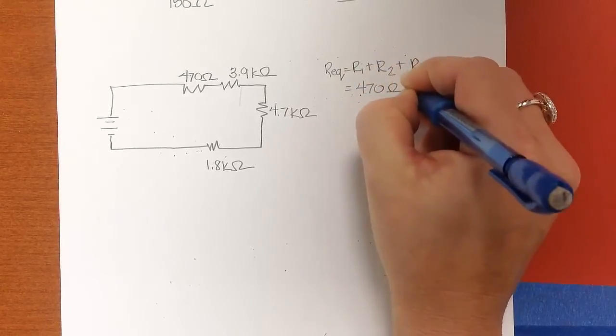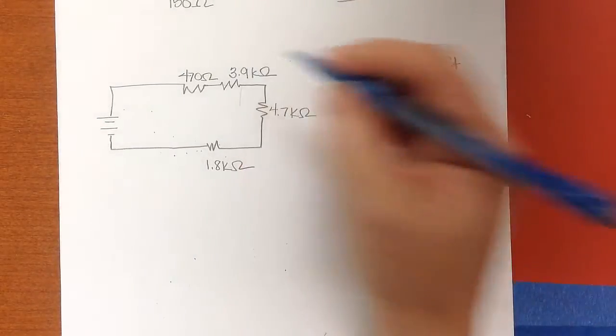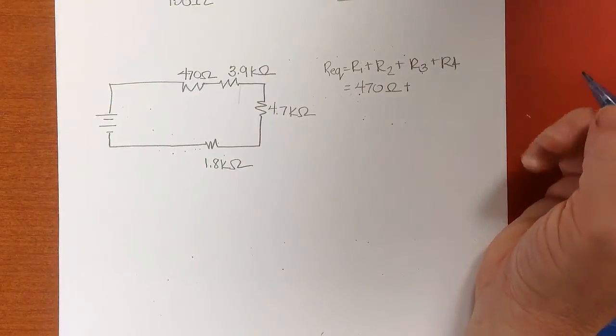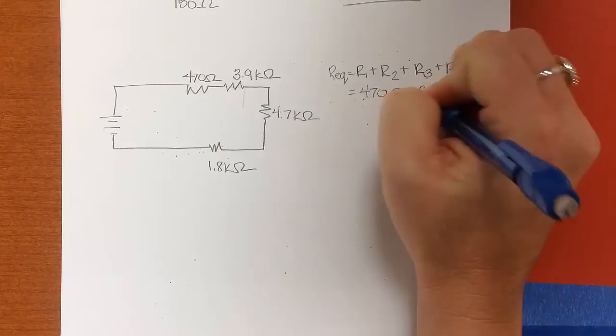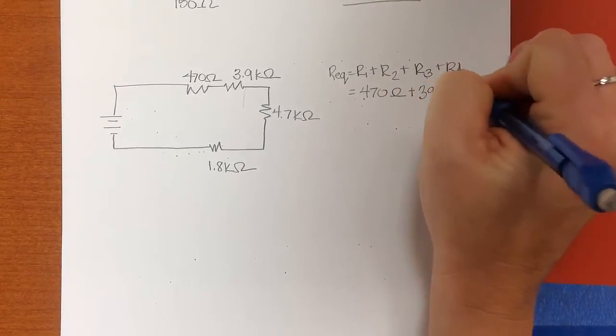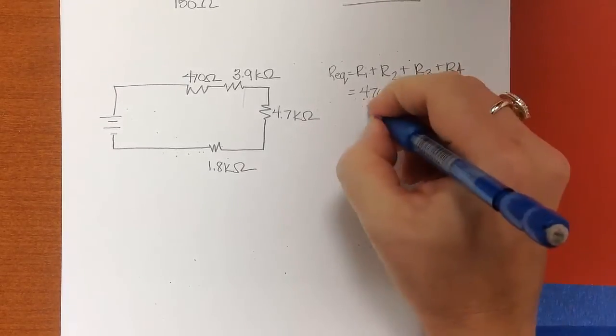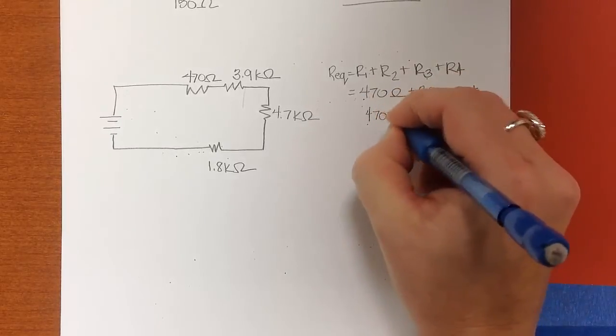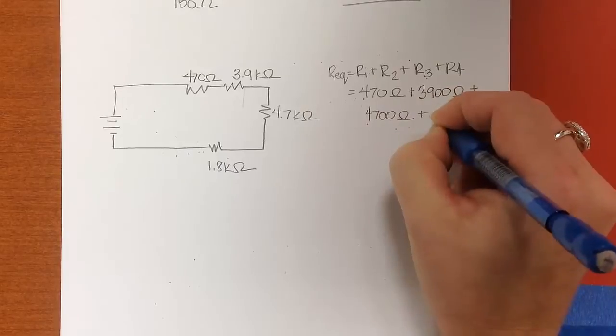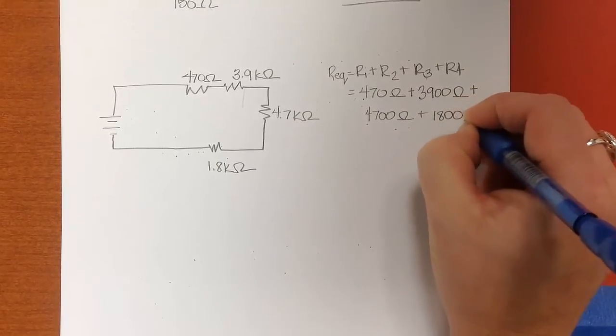So the equivalent resistance is going to be the sum of those: 470 ohms plus 3.9K, that's 3.9 times 10 to the third, or that would be 3,900 ohms plus 4,700 ohms plus 1,800 ohms.